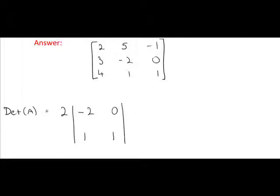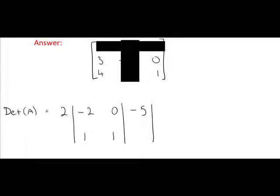Next, on the top row, we go to 5. Now, the middle number always changes sign, so plus 5 becomes a minus 5. Again, we cover the row that 5 is on, and the column that 5 is on. And we're left with 3, 0, 4, 1.